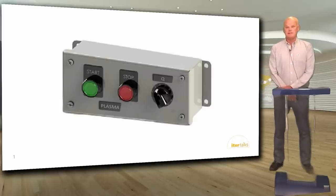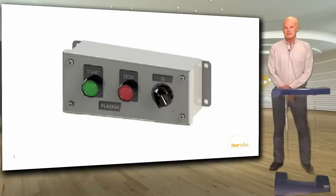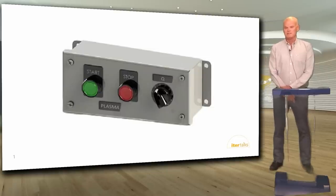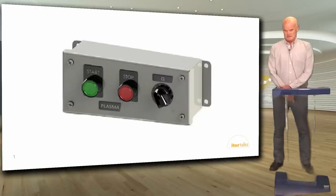I start by showing this picture of the integrated control system. This is all we need: three buttons. One to start the plasma, one to stop the plasma, and a dial to select the required Q. Remember that the Q value is the efficiency factor — the fusion power divided by the injected power — and a value over one is break-even.